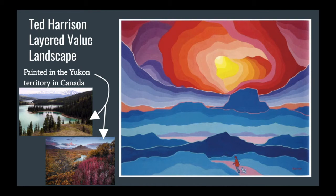So Ted Harrison uses layered values in his landscape, and he is a painter in Canada. He paints a lot of the Yukon Territory in Canada. Those pictures on the left are from the Yukon Territory, and then on the right is his painting of one of the areas he visited.